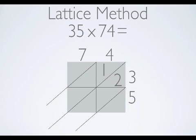4 times 3 is 12, and I record my answer like this. The 1 from the 10's in 12 goes on top of the diagonal, and the 2 from the 1's in 12 goes beneath the diagonal.